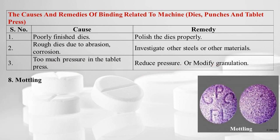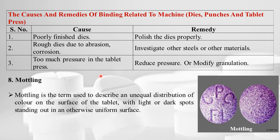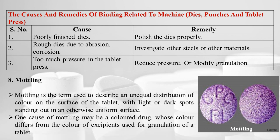Mottling is the term used to describe an unequal distribution of color on the surface of the tablet, with light or dark spots standing out on an otherwise uniform surface. One cause of mottling may be a colored drug whose color differs from the color of the excipients used in the granulation.